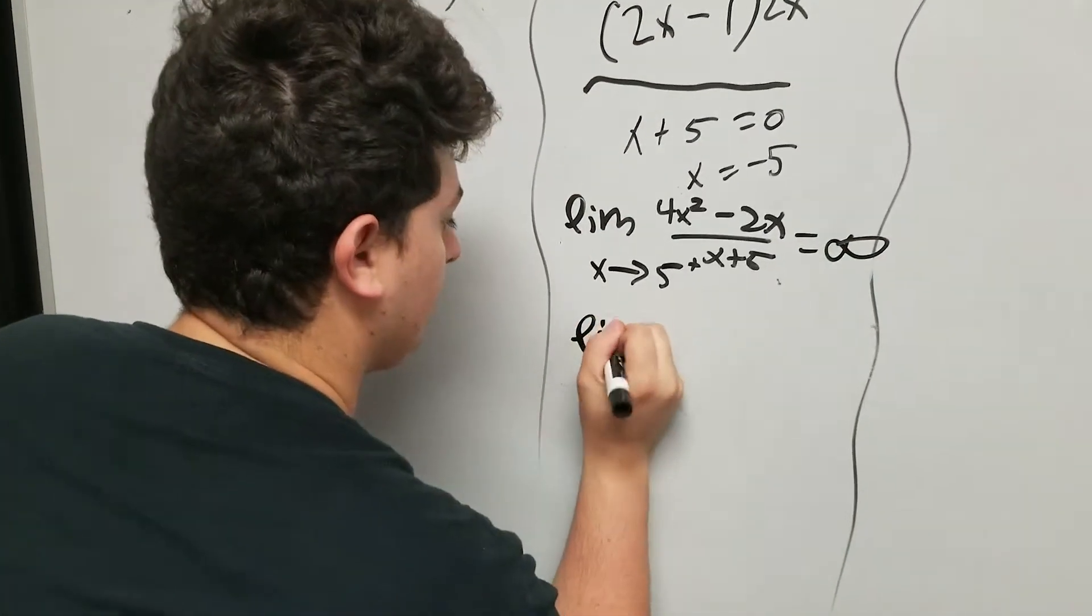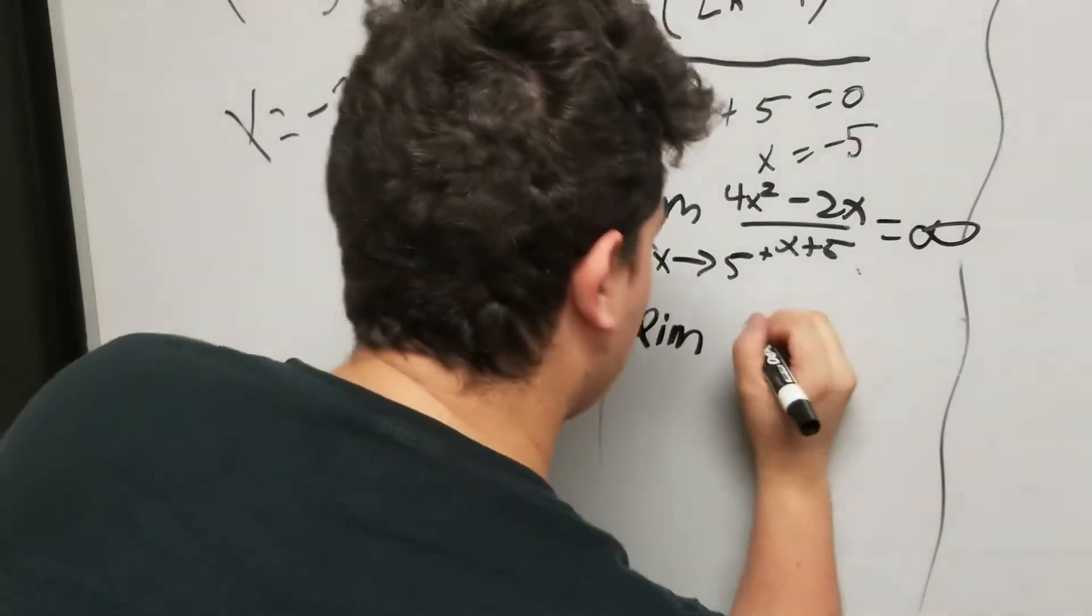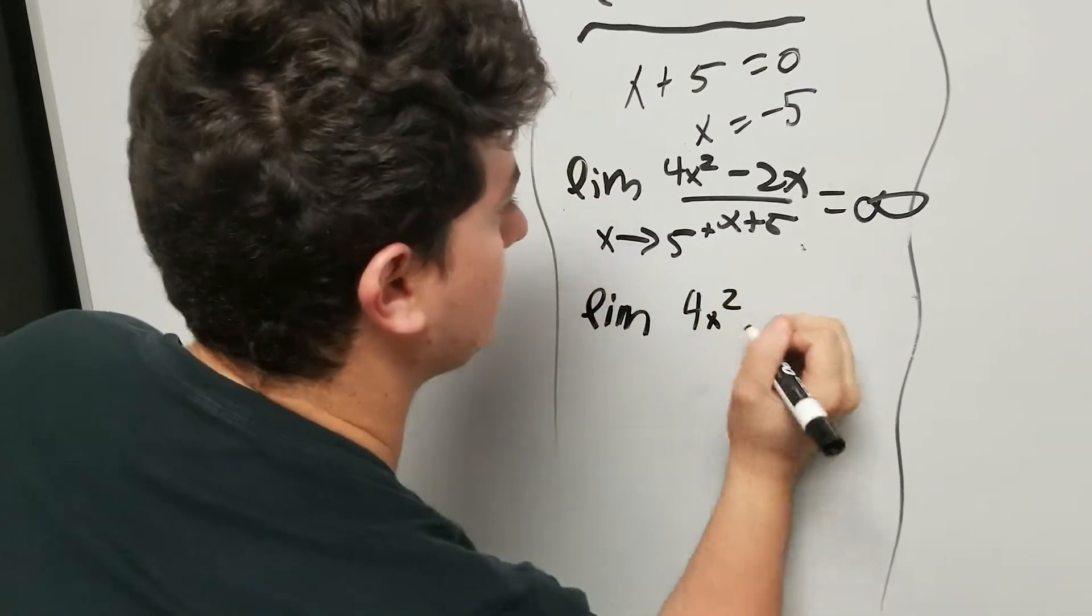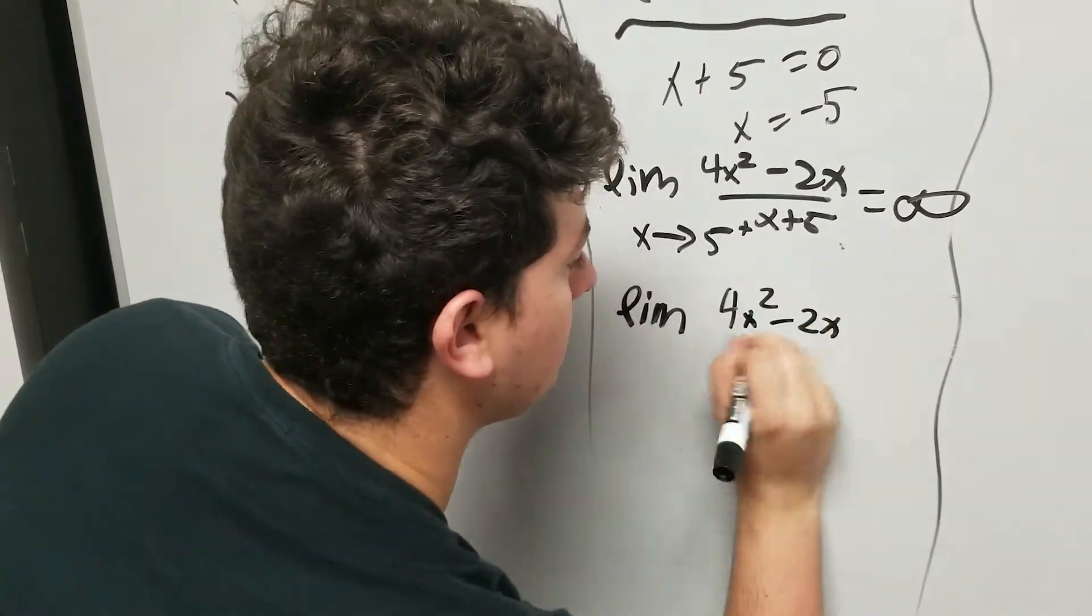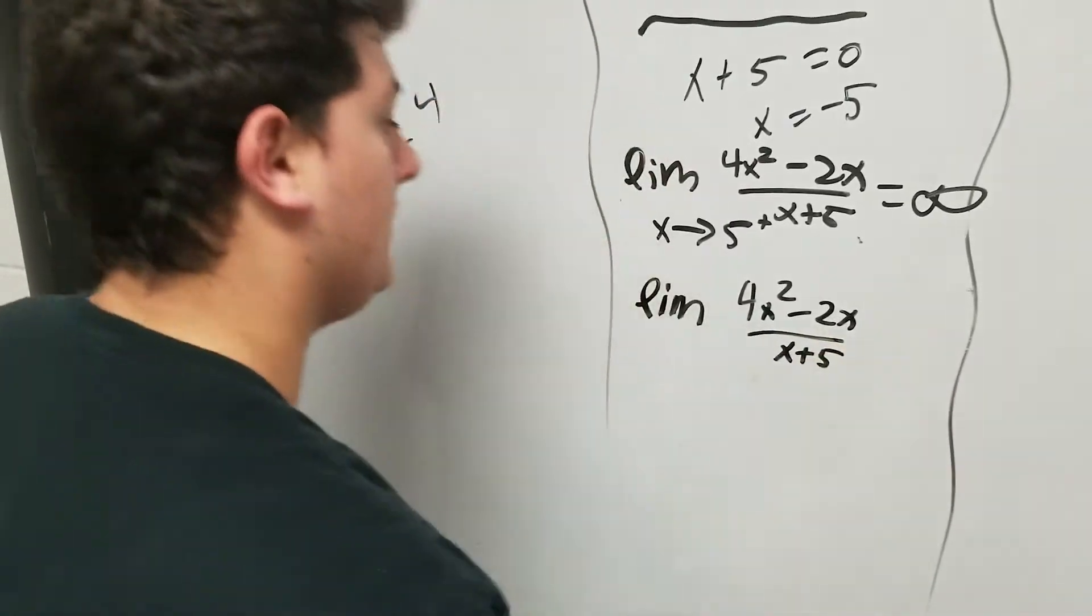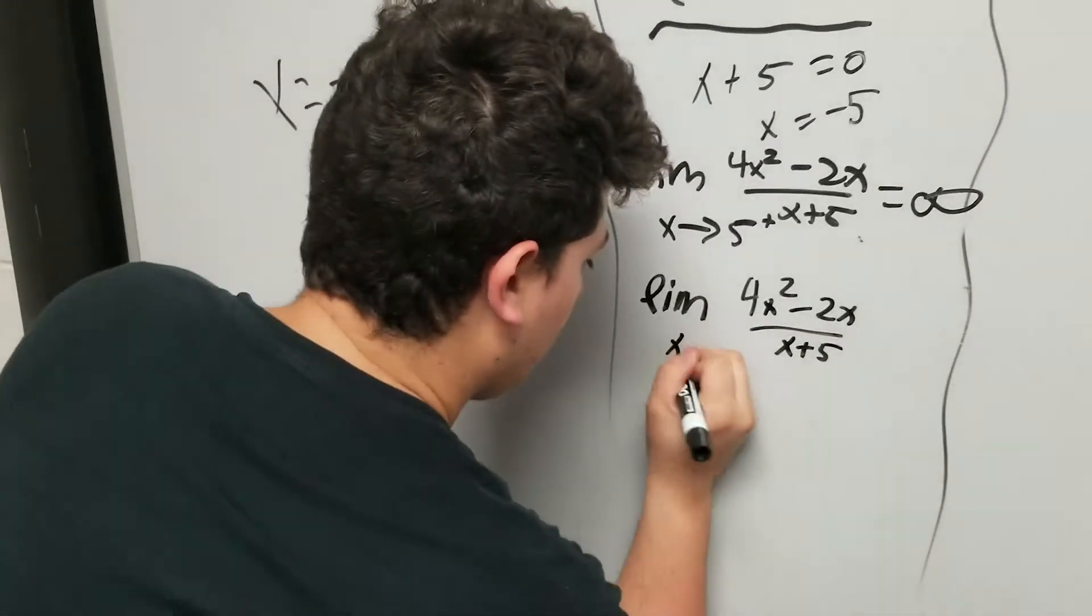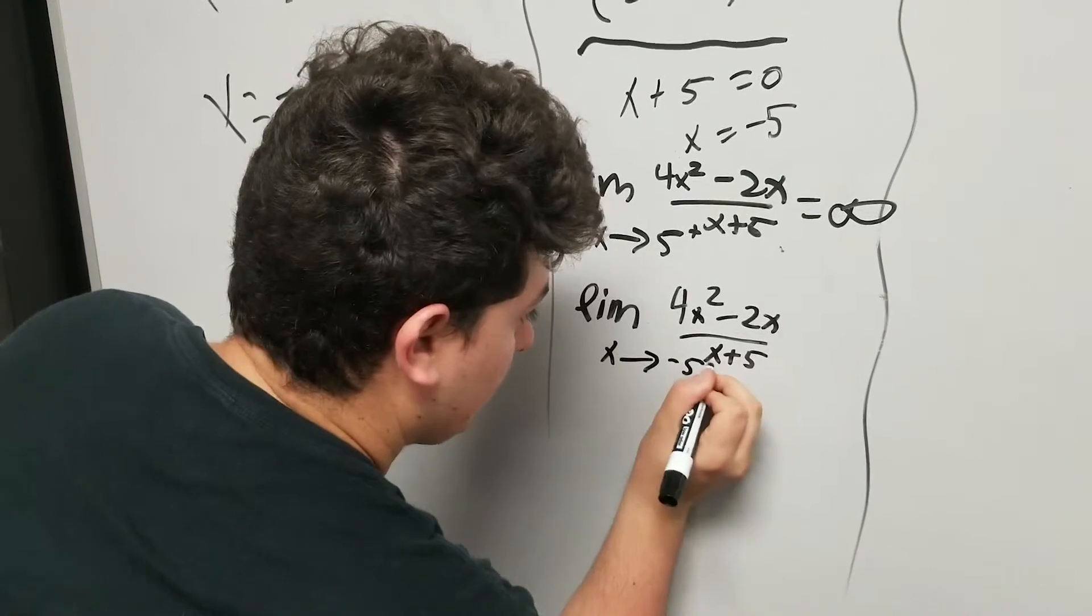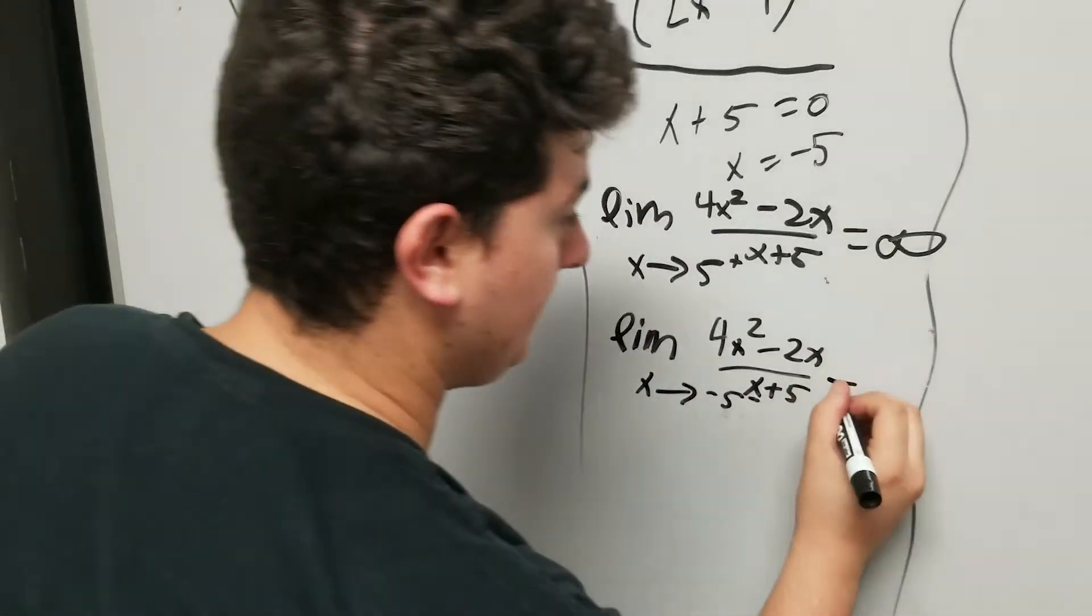We're going to do the same thing for the left side limit, the negative side. I'm going to do 4x² minus 2x over x plus 5. Then I'm going to go to the limit, negative 5 to the negative, because that's going to be a negative infinity.